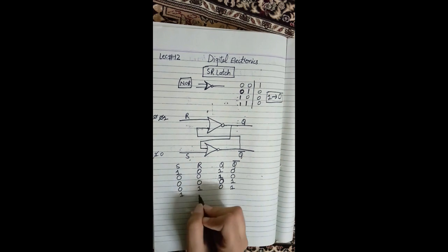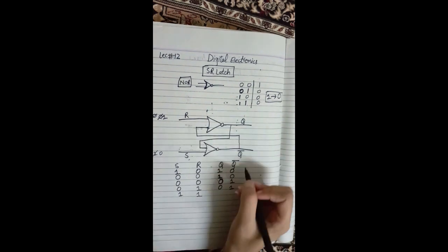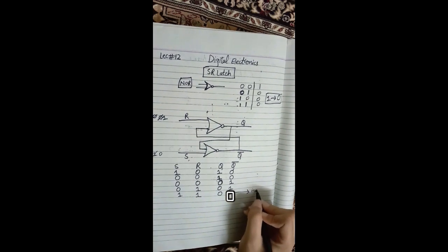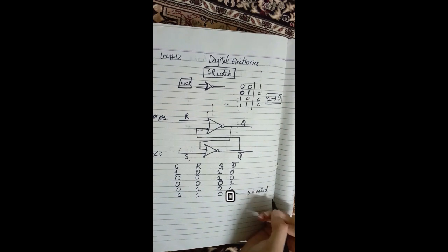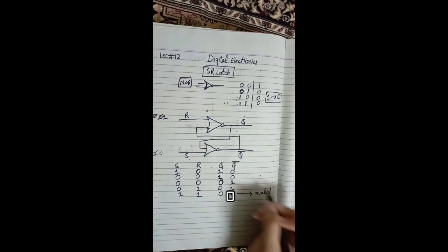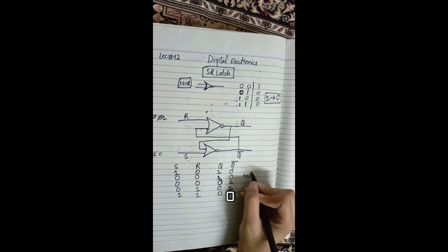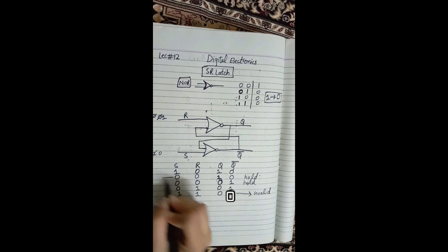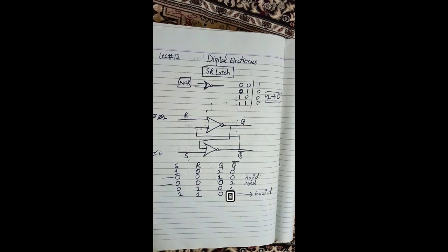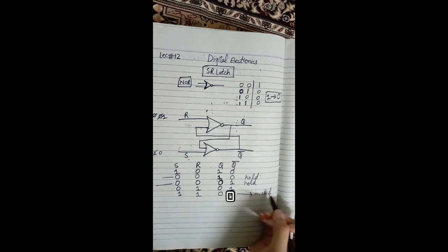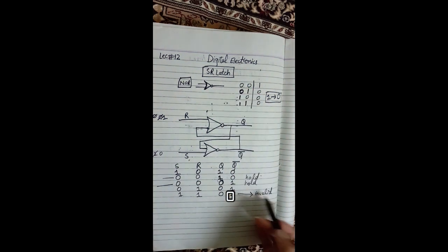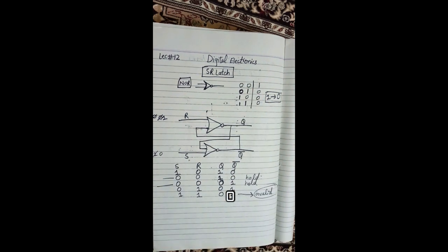When S=1 and R=1, both outputs will be 0. This is an invalid state for the SR latch — the 1,1 condition is invalid. For the 0,0 condition we get the hold states. To solve this invalidity we will study the SR flip-flop, where this invalid state is resolved.